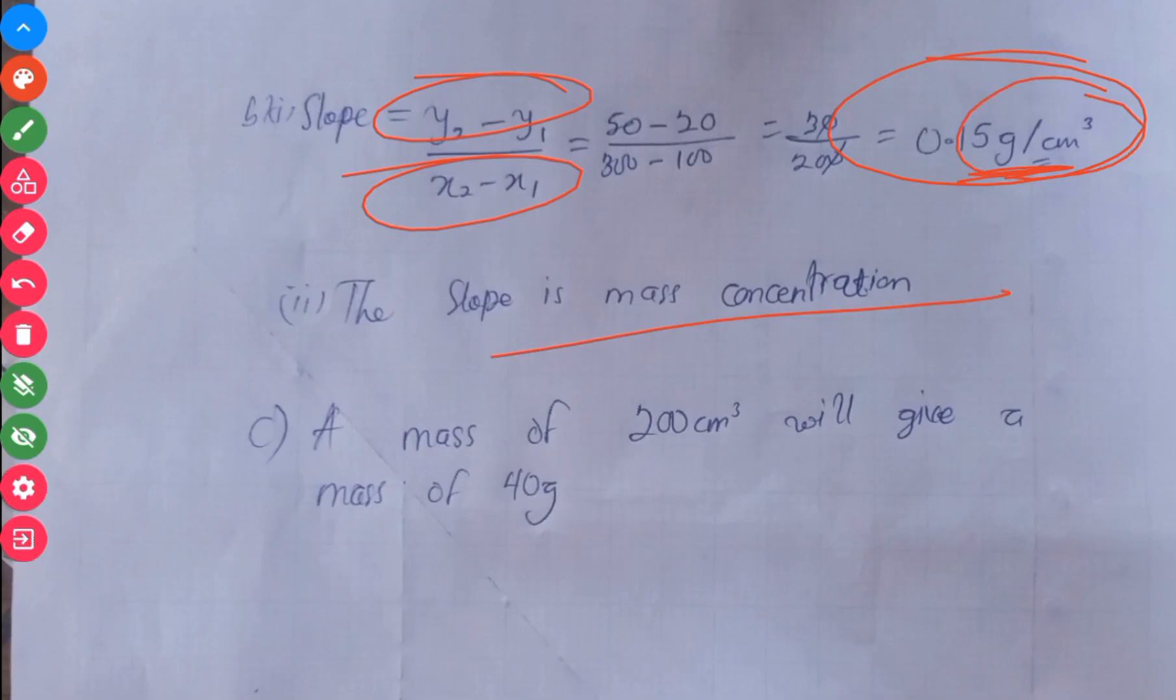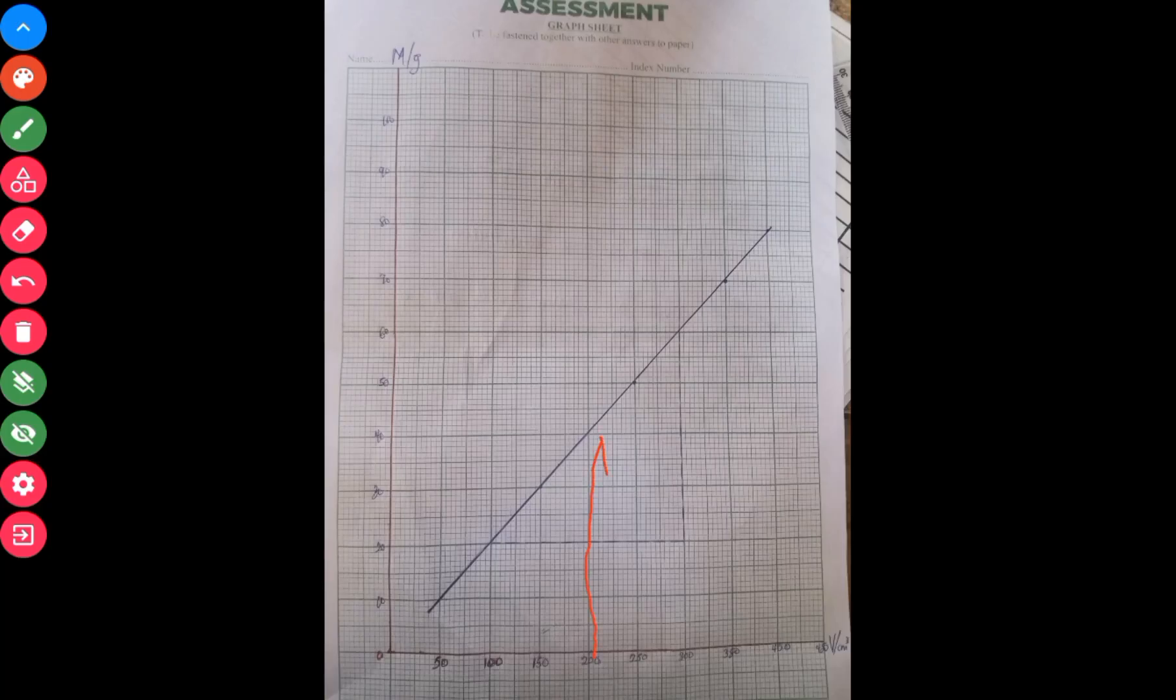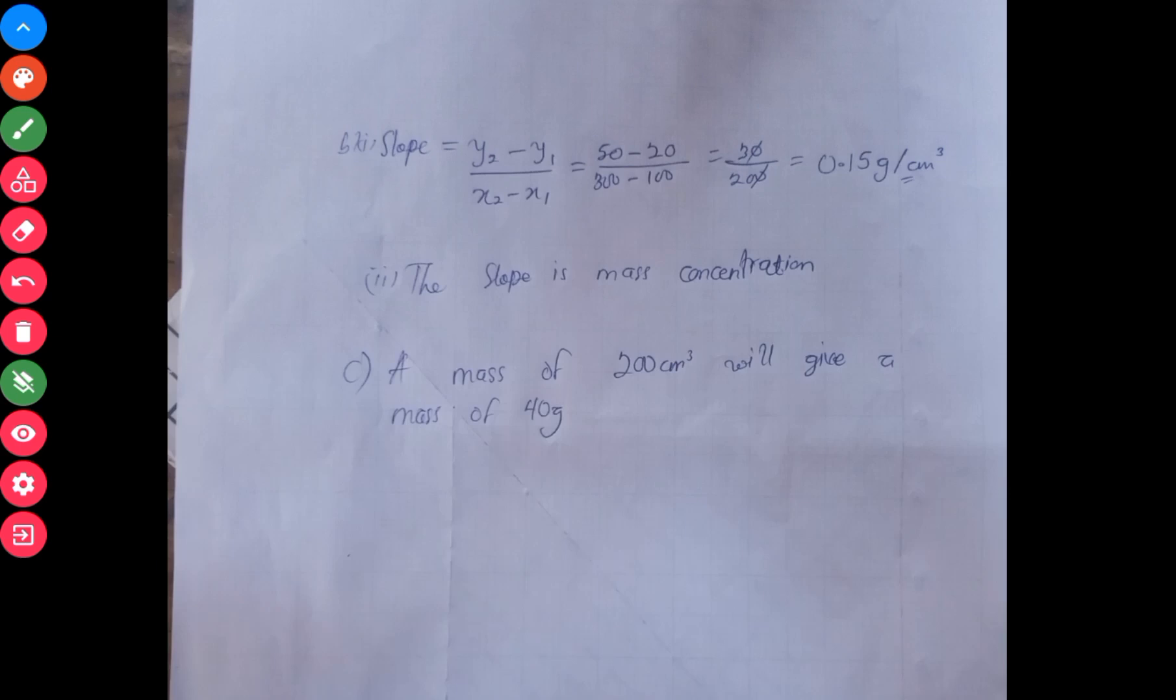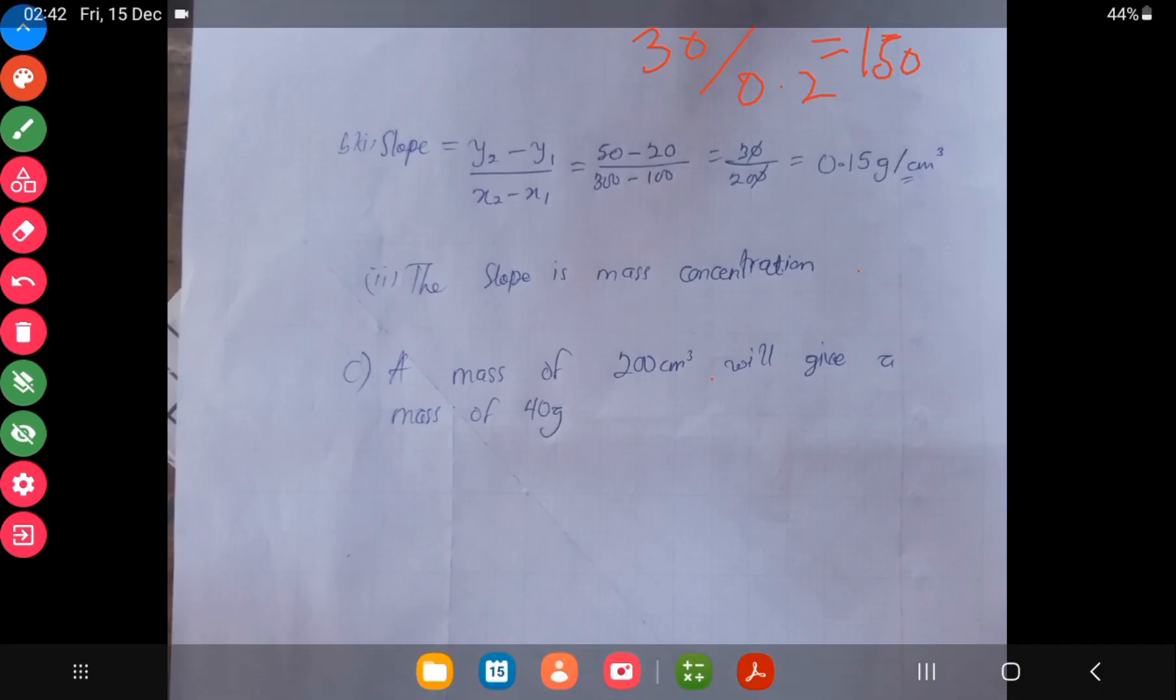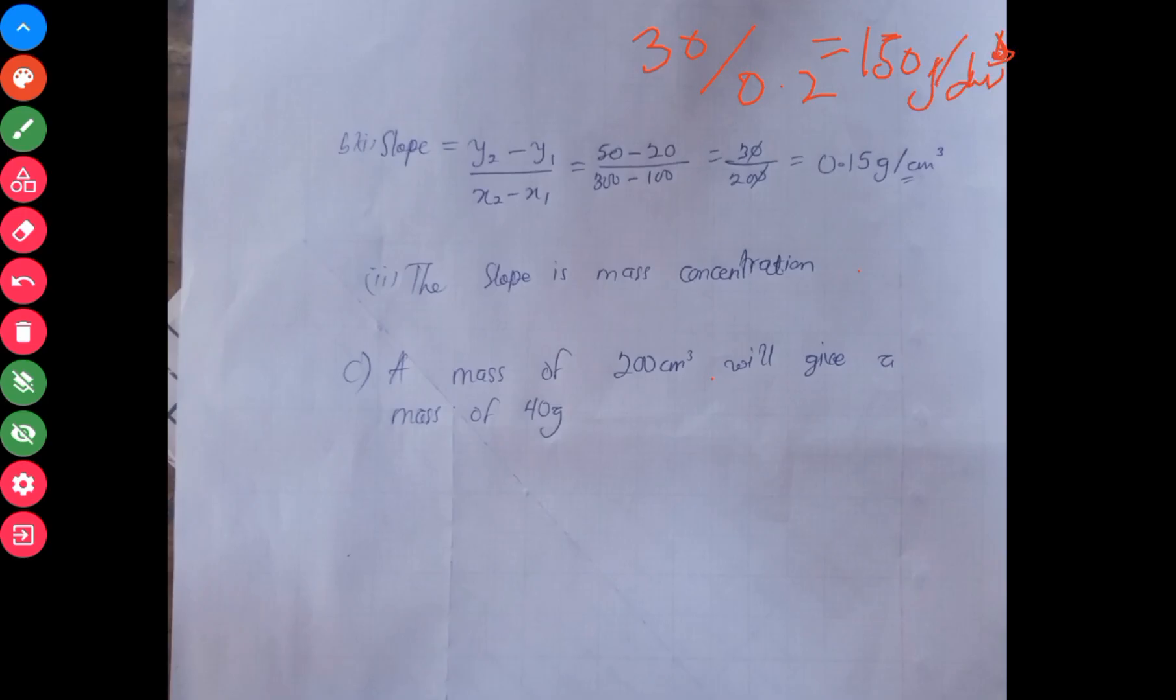What volume would give 40 grams of the sodium hydroxide? I was using a ruler to match to the 40 grams because of the 200 centimeter cube. One adjustment I would have to do here: when it comes to working in mole concepts, the volume is mostly in dm³. Looking at this one, I could have converted it to dm³, so I would have gotten 30 over 0.2, which would have given me 150 gram per dm³.